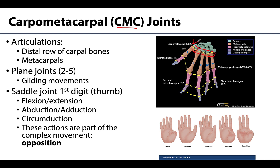The carpometacarpal joint of the first digit is capable of flexion and extension, which uniquely in the thumb is going to occur in the coronal plane. Flexion is moving in the coronal plane towards the palm, and extension is going to be away from the palm, such as jutting the thumb out laterally — like what is sometimes called a hitchhiker's thumb.